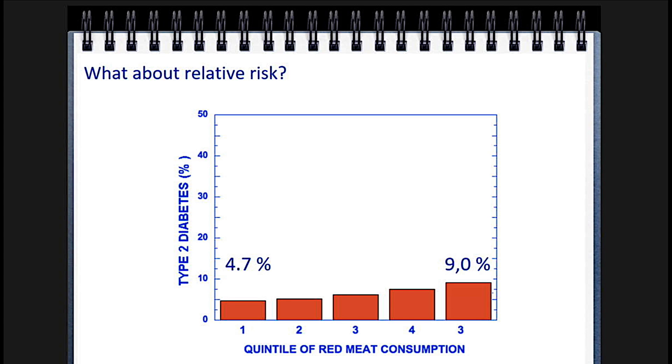What you see in the literature frequently is relative risk. I plotted this out and did the same calculation we used to get the 9%. The actual difference between the two groups is 4.3%. If you take the ratio of 4.3 to 4.7, you get stuff in the journal like 'a 91% increase in risk.' What this is saying is that relative risk is almost always misleading. I can actually double your chances of winning the lottery — buy two tickets instead of one. That's a 100% increase, but it's not going to make you do it.